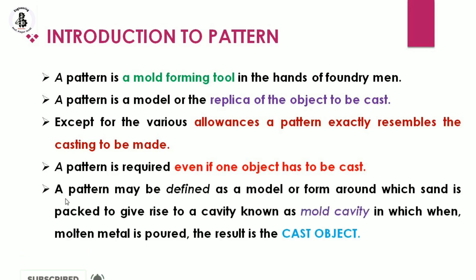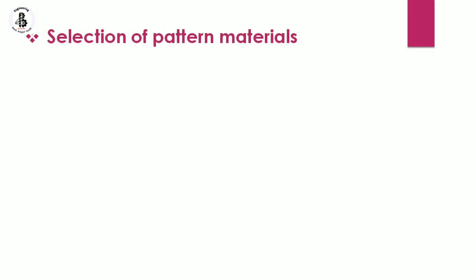A pattern may be defined as a model or form around which sand is packed to give rise to a cavity known as the mold cavity. When molten metal is poured into this cavity, the result is a cast object or cast product. In simple terms, a pattern represents a replica of the object to be cast.